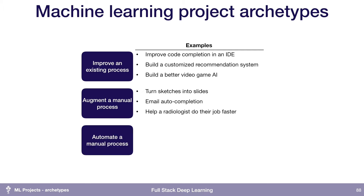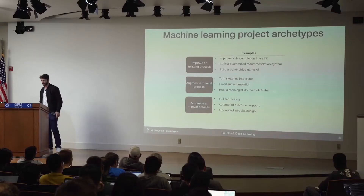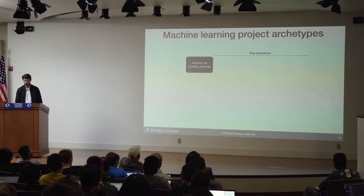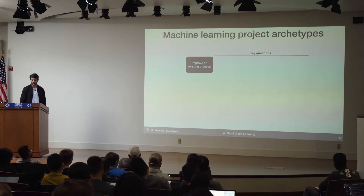The last category is automating manual processes. This includes things like full self-driving, fully automated customer support, or fully automated design — like trying to create website designs from scratch. Once you decide which of these categories your project is in, there are a few questions you want to ask yourself that might help increase the likelihood of success.